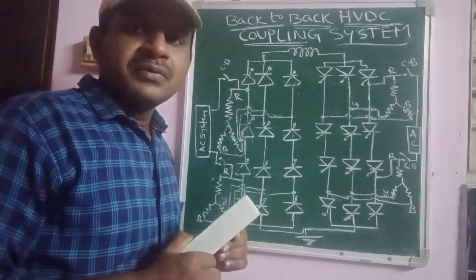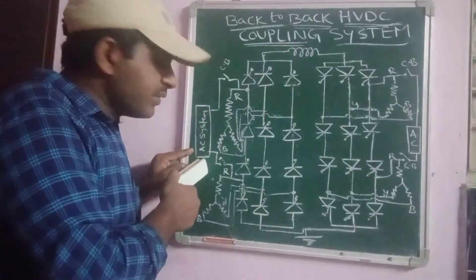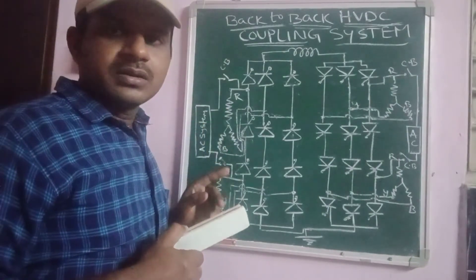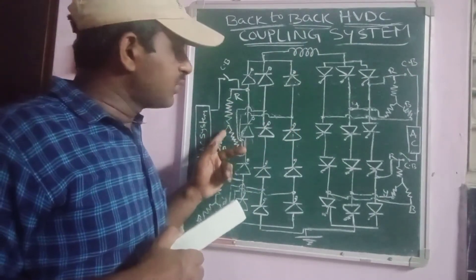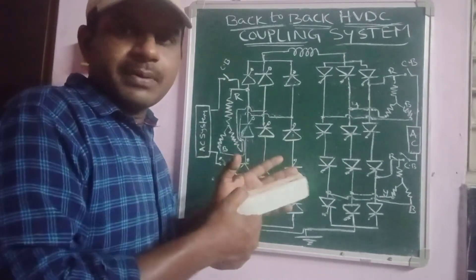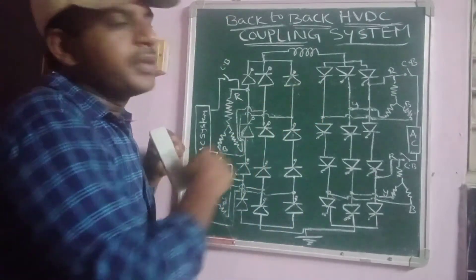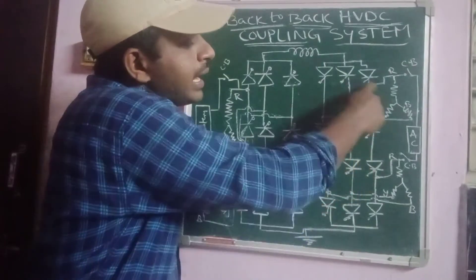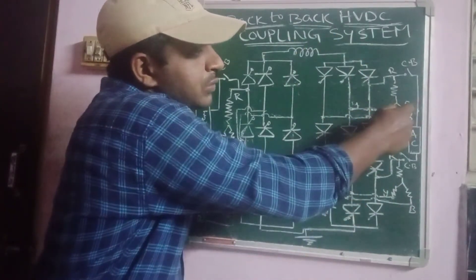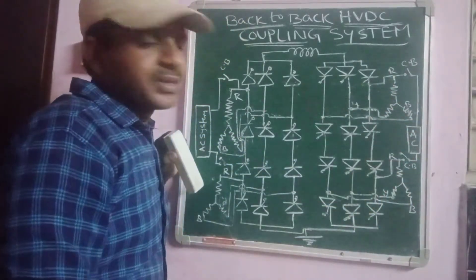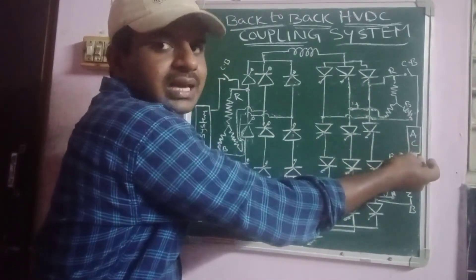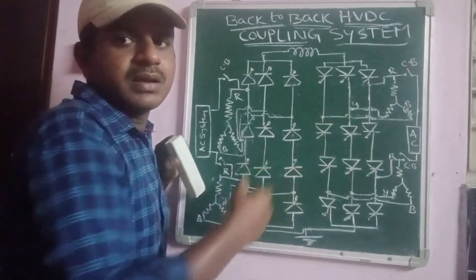The power conversion process works as follows: we supply AC power from conventional sources, which is fed into a transformer to step up the voltage. That voltage is given to the rectifier station, which converts AC power into DC power. The DC power travels through the entire DC link and is given to the inverter station, which converts DC power back into AC power. That AC power is given to two three-phase transformers, which step up the voltage again before supplying it to load centers, also called the grid.